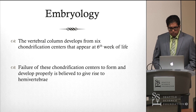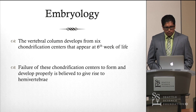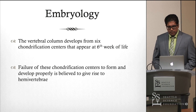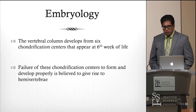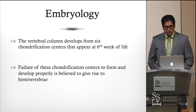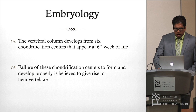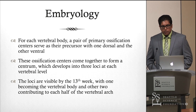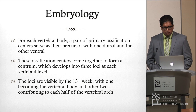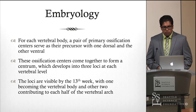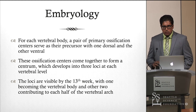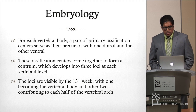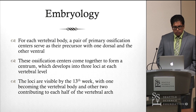The vertebral column normally develops from six separate chondrification centers that appear by the sixth week of life. One cause of hemivertebra may simply be failure of these chondrification centers to form properly. If they do form properly, then at each vertebral body you will have a pair of primary ossification centers — one located dorsally and one ventrally — giving one primary ossification center for each level of the vertebral column. These ossification centers then come together to form a centrum.